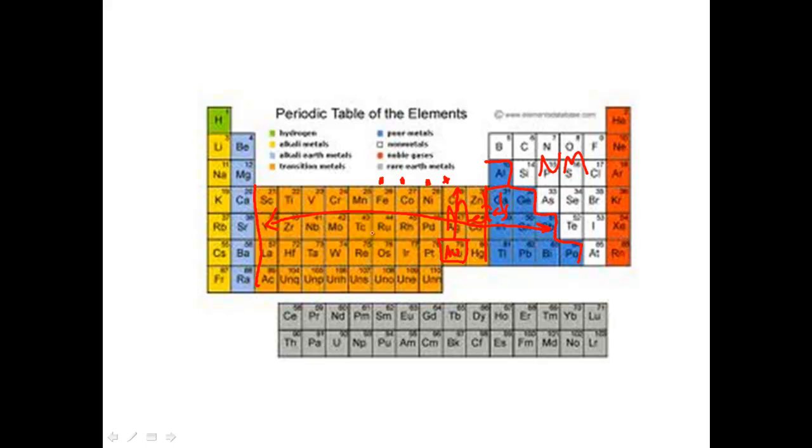Whenever I have an element that is located within the D-block and also underneath the staircase minus aluminum, I need to actually note the charge when I name the formula because these are known as variable charge ions. Because they have more than one charge, we have a whole lesson on this guys. You can tune into that video for it. You need to name the charge when you name the element. So once again, it's for an element that's found in the D-block and underneath the staircase minus aluminum. So all these elements in blue would need more than one charge named.